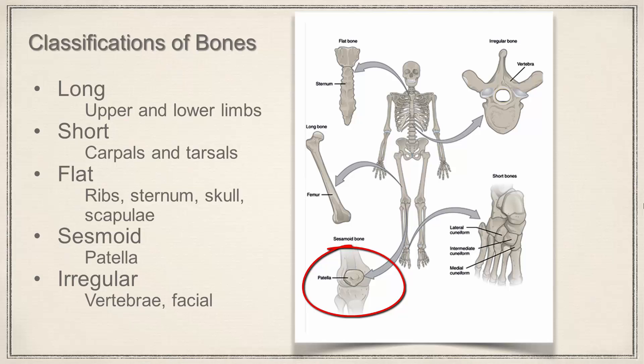But anyway, so sesamoid bones tend to be embedded in tendons and they help give a little extra leverage. Actually at the base of your big toe there's a couple of sesamoid bones there as well. And when you think about it, you need quite a bit of leverage as you push off when you walk - the big toe is pushing off, and so again just at the base of that big toe you'll find a couple of sesamoids.